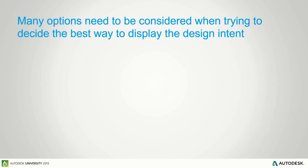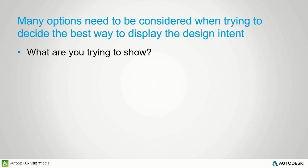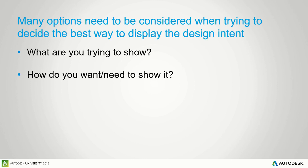Many options need to be considered when deciding the best way to display design intent. Ask yourself: what are you trying to show — is it system-specific or location-specific? How do you want or need to show it? We want to start with eighth-inch plans if we can get the information there consistently with other plans, but you can't always do that, as in the case where all those plan notes are just cluttering things up.